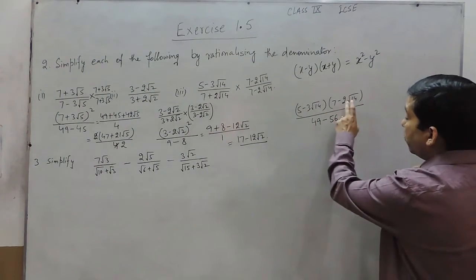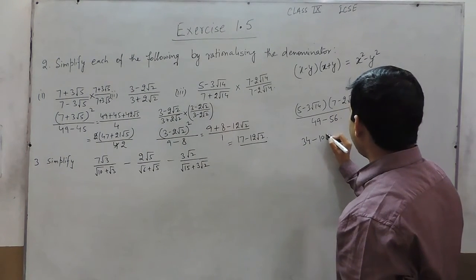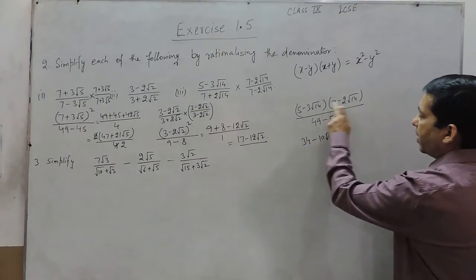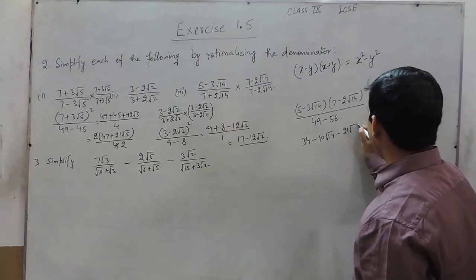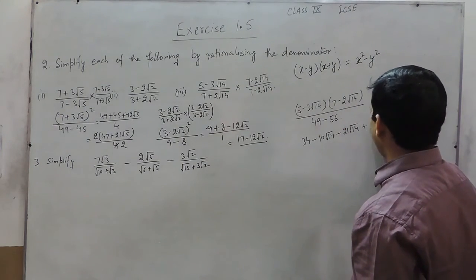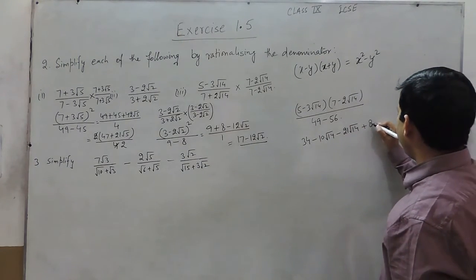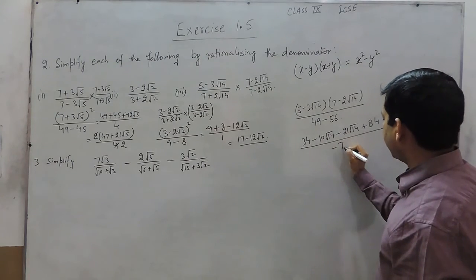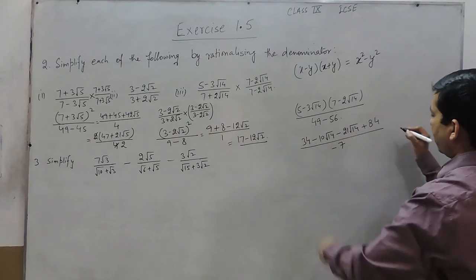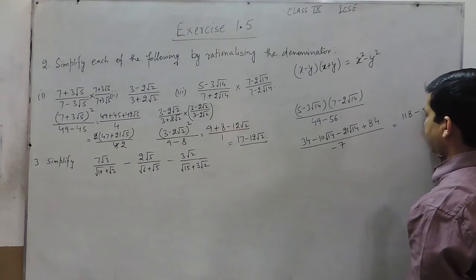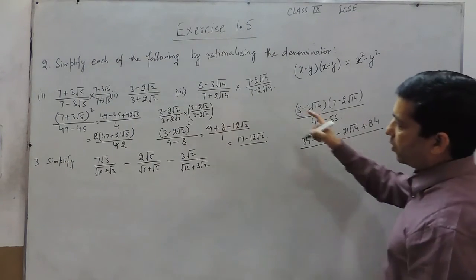Multiplying the numerators: 5 into 7 is 35, minus 5 times 2 root 14 is 10 root 14, minus 3 root 14 times 7 is 21 root 14, and 3 times 2 times 14 is 84. So the denominator is negative 7. Calculating: 84 plus 35 gives 119, and combining the root 14 terms gives minus 31 root 14. The answer is (119 minus 31 root 14) upon negative 7.